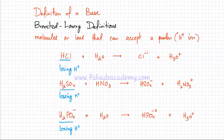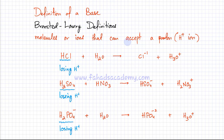Now we are going to discuss the definition of a base — specifically the Bronsted-Lowry definition. It is completely the opposite of a Bronsted-Lowry acid. A Bronsted-Lowry acid donates a proton or H+1 ion, whereas a base is a molecule or ion that can accept a proton or H+1 ion.